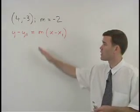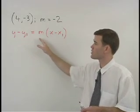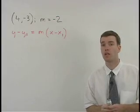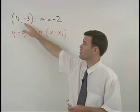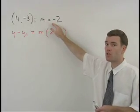So let's use the point slope formula, y minus y1 equals m times x minus x1, to write the equation of the line that passes through the point 4 negative 3 and has a slope of negative 2.